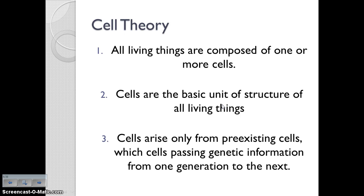We have the development of the cell theory, which are these three fundamental statements about cells. Statement number one: all living things are composed of one or more cells. Statement number two: cells are the basic unit of structure of all living things. And number three: cells arise only from pre-existing cells, with cells passing genetic information from one generation to the next. These things seem simple, but it was actually a lot of work by many different scientists that allowed us to form these modern-day understandings of cells.